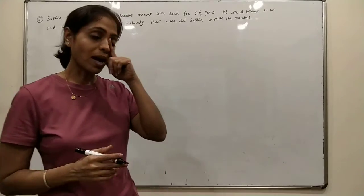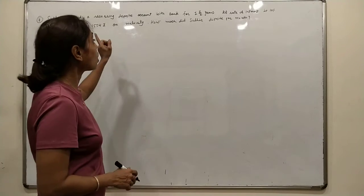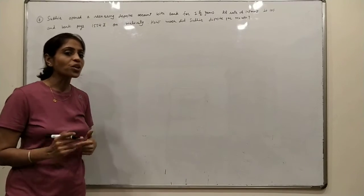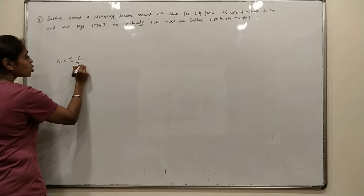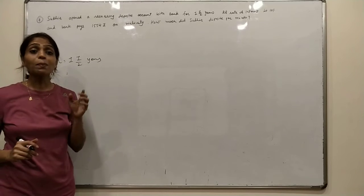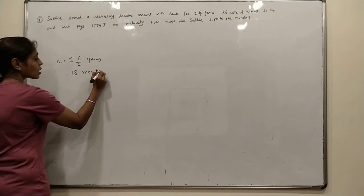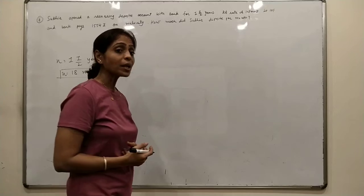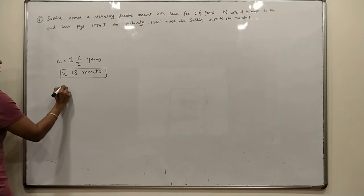The question is to open a recurring deposit account with a bank for 1.5 years. You have to convert the years into months. So N is equal to 1.5 years, meaning 12 plus 6, which is 18 months. So N equals 18 months. Sudhir will open a recurring deposit account for 18 months. If the rate of interest is 10%, and the bank pays 1554 at maturity.